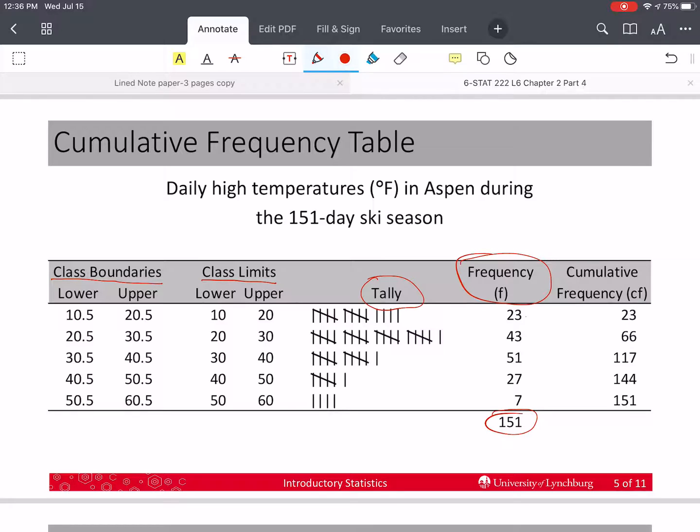Well, the first one's very easy. It's the same. So once we have the first cumulative frequency, we take it and we add it to the next frequency, and that gives us the next value. So 23 plus 43 is 66.